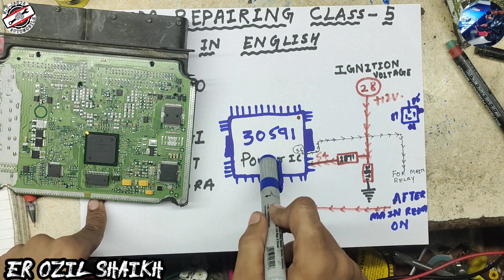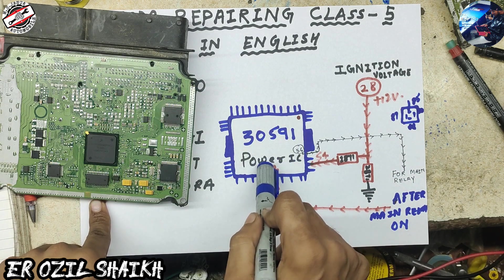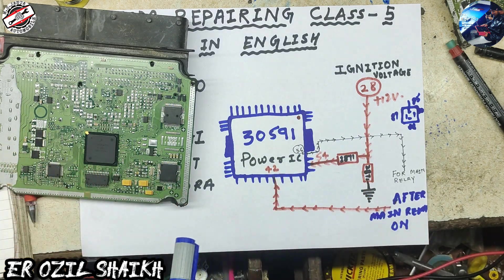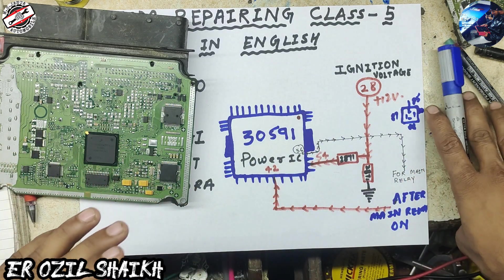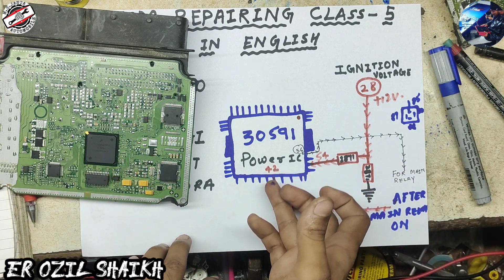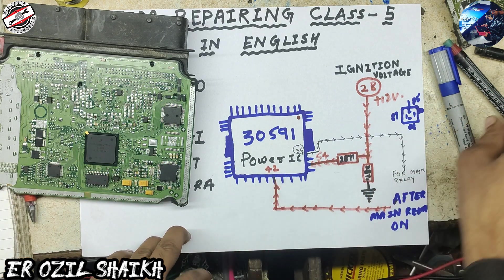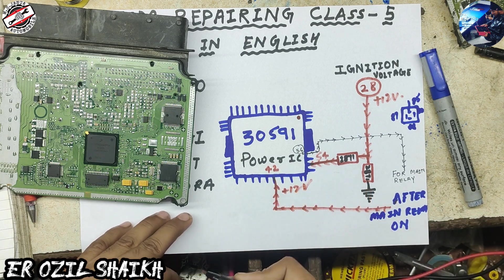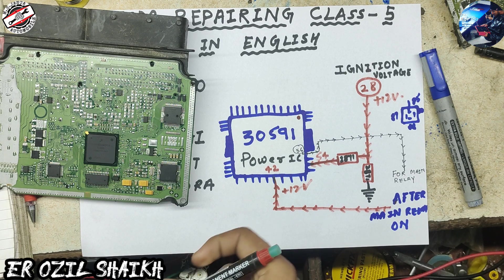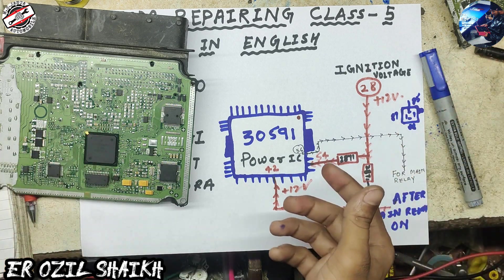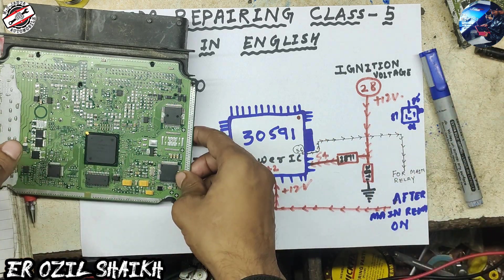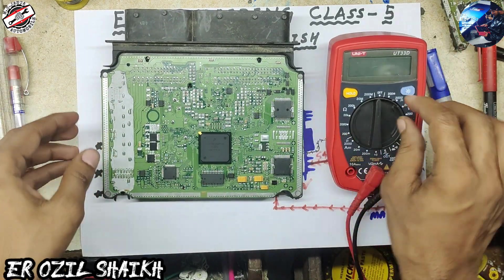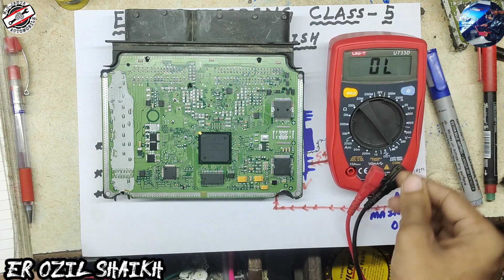If IC pin number 42 receives 12 volts, the full ECM will turn on and start working. When this battery voltage does not come to pin number 42, the ECM will not start or work. Now I'm going to trace it out on the board — set the multimeter to continuity.